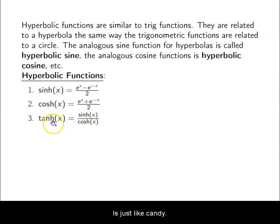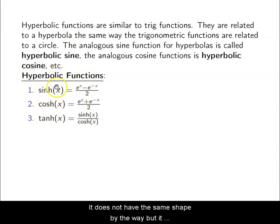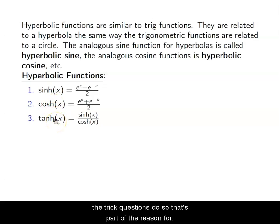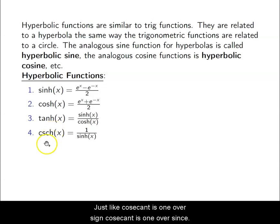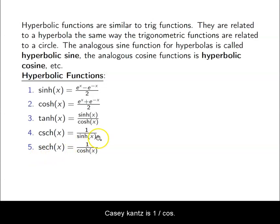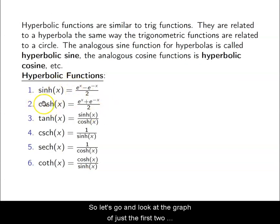The tanh function is cinch over cosh, just like tangent is sine over cosine. The 'h' at the end signifies it is a hyperbolic function. It doesn't have the same shape as tangent, but it behaves identically in terms of identities. Cosecant hyperbolic (cosecanch) is one over cinch, just like cosecant is one over sine. Secant hyperbolic (secanch) is one over cosh, and coth is cosh over cinch.